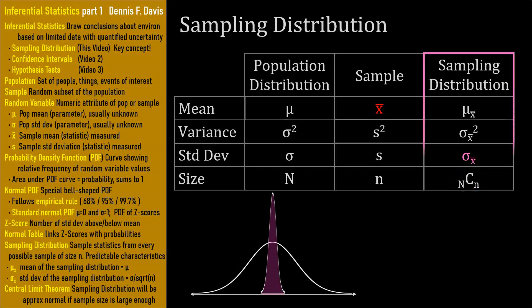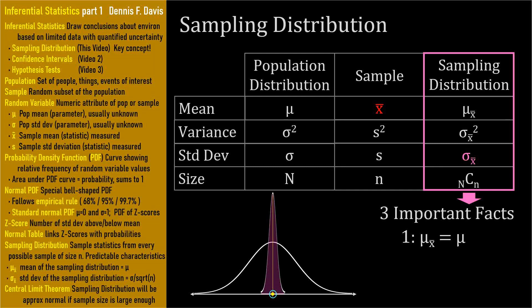Here are three very important facts to know about the sampling distribution. First, the mean of the sampling distribution, mu sub x-bar, will be equal to the population mean mu — the means will line up. Please note this isn't saying that our sample mean x-bar is equal to mu. Our sample mean will itself be a random variable from the sampling distribution — the sampling distribution includes every possible sample of size n, and our actual sample was just one of them.